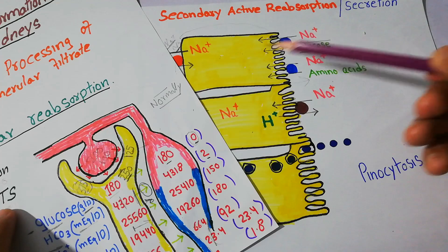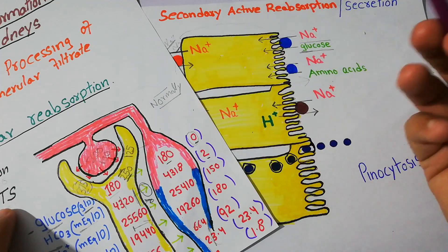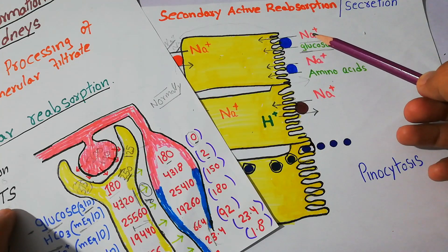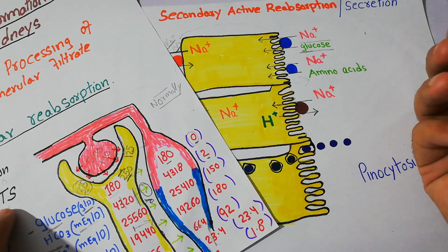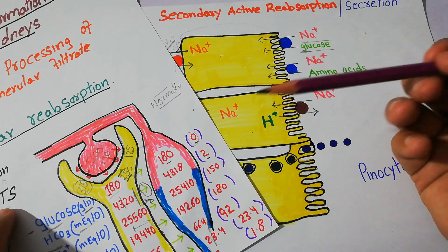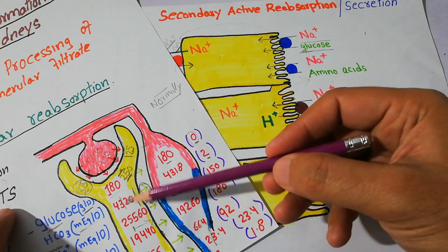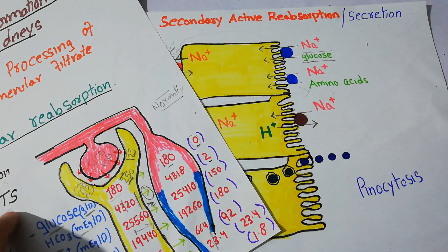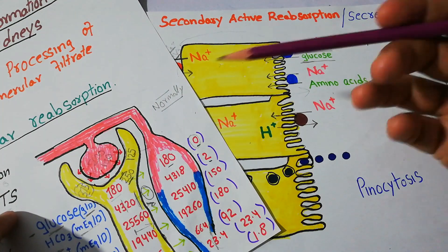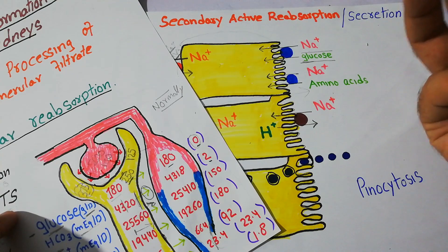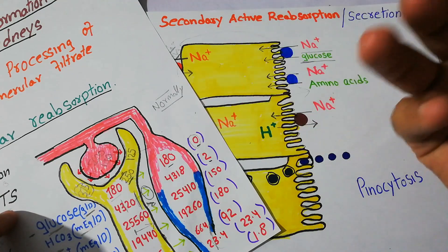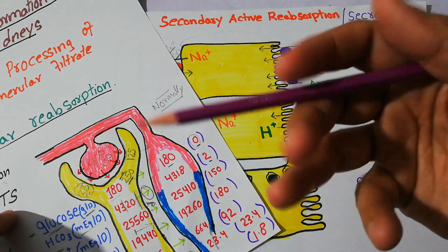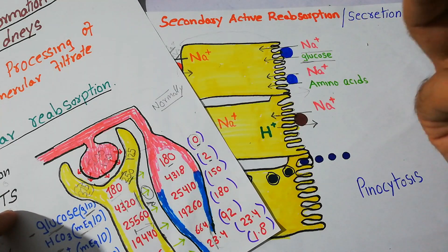The reabsorption of glucose — sodium and glucose — is ongoing and the reabsorption of glucose also needs energy. Similarly, water reabsorption from the proximal tubule into the blood needs some kind of energy, but it is not a direct energy. This energy basically comes from the gradient — the concentration gradient.